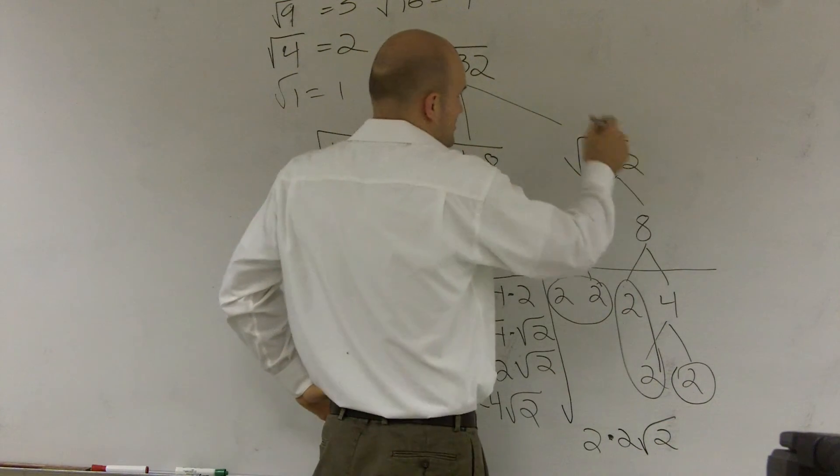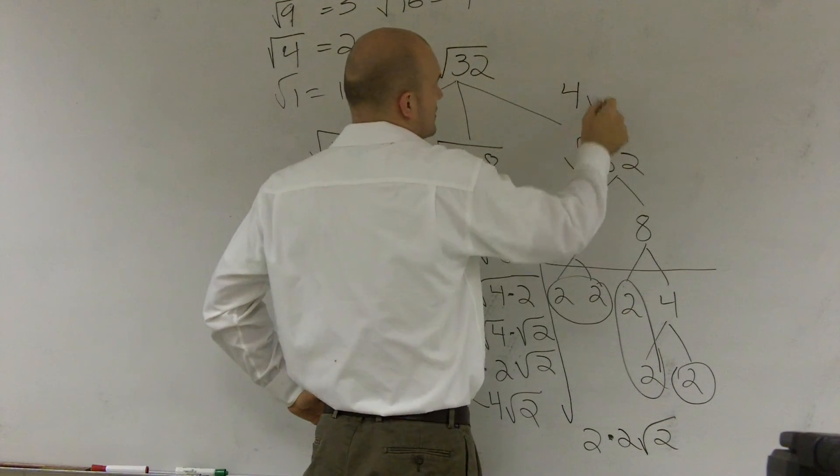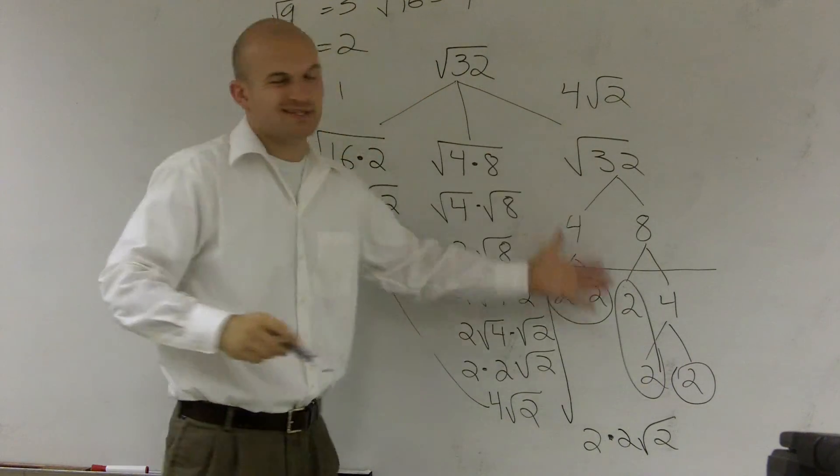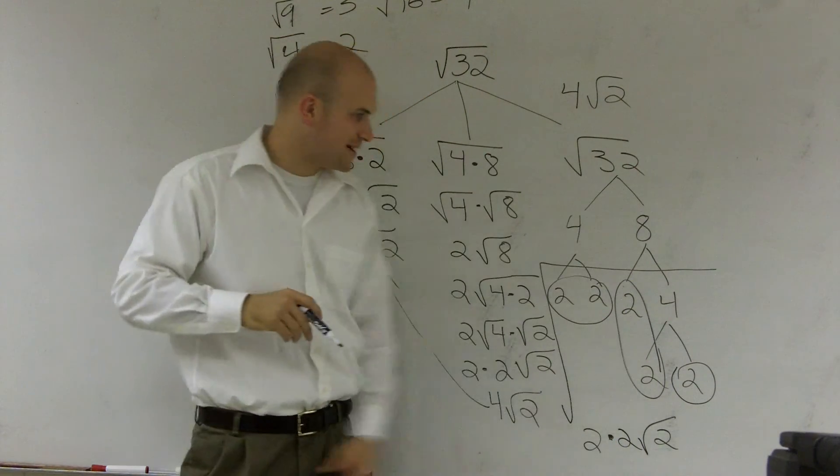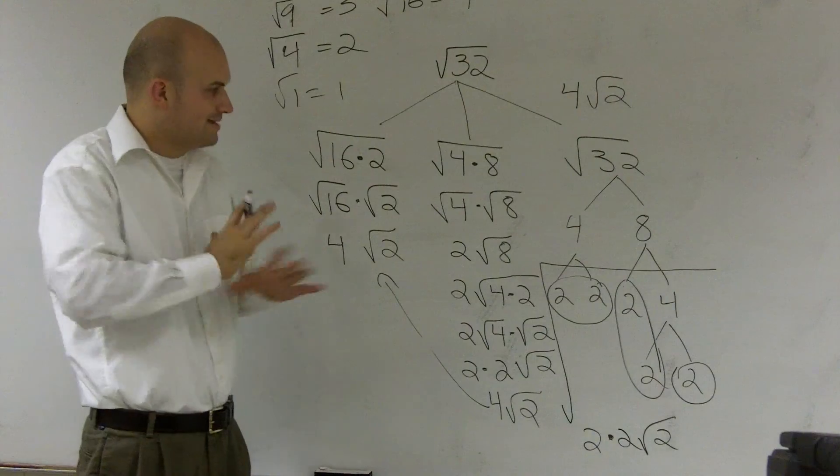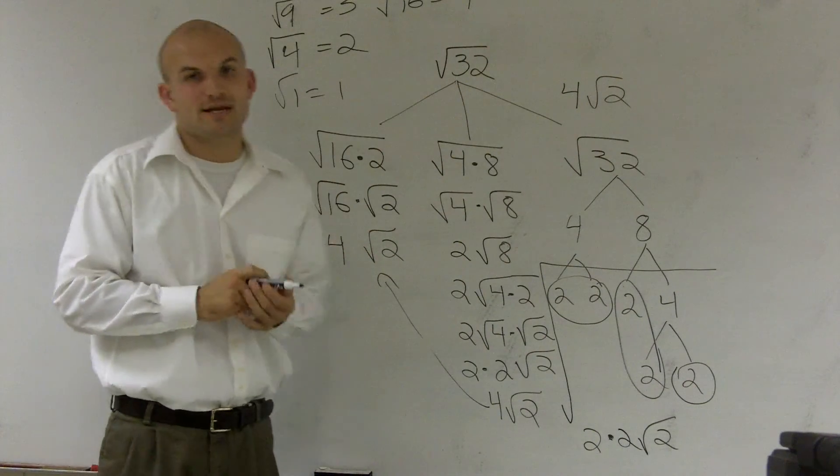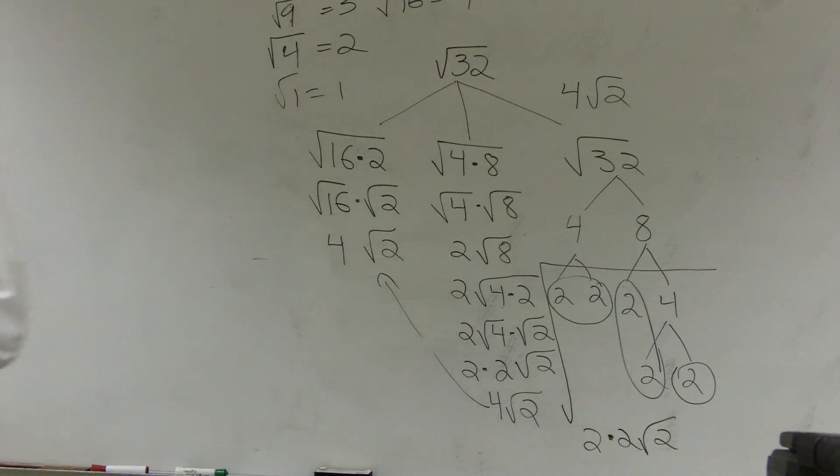So the final answer, again, which is the same thing, is 4 times the square root of 2. I don't know if you guys understand this one. I never really like teaching it this way. But some people understand it that way, so that's awesome. Work with it. But those are three different ways you guys can solve for the square root of 32.